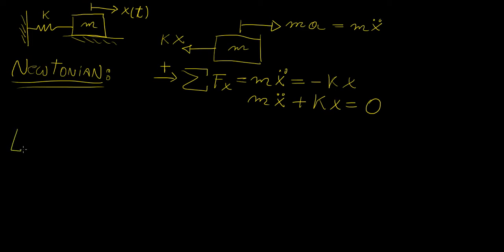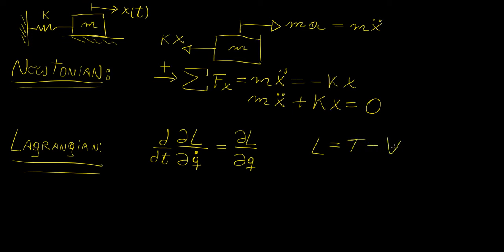So now we're going to take the Lagrangian approach. The way it works is as follows, we have our Lagrangian equation, which we know looks like this, so we have q, which is just a generalized coordinate. And we know that the Lagrangian itself is a quantity associated with the energy, so we have kinetic energy and potential energy.